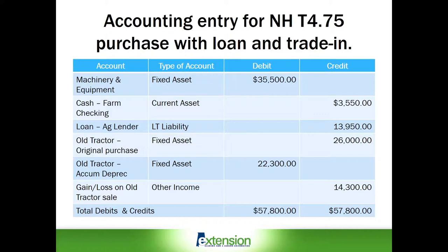Now back to accounting. Like all accounting entries, debit and credit entries must be in balance. In this example, total debits and credits are $57,800. Let's briefly review it. Line one: machinery and equipment for fixed assets is debited for the total amount of the new tractor, $35,500.